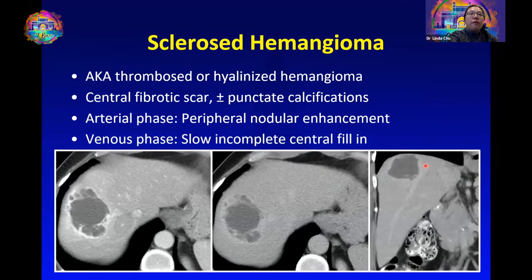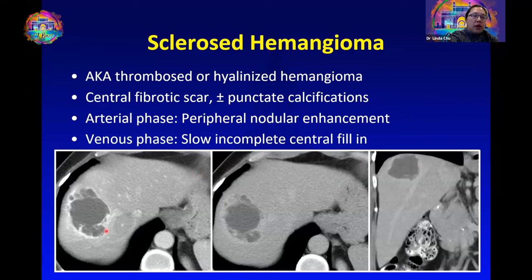The fourth type is the sclerosed hemangioma, also known as thrombosed or hyalinized hemangioma. These hemangiomas have a central fibrotic scar and may have punctate calcifications, so they look less classic. On the arterial phase you still see peripheral nodular enhancement, but because the hemangioma is centrally thrombosed you don't expect to see complete fill-in on the venous phase.